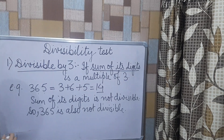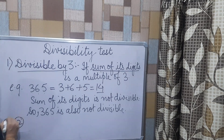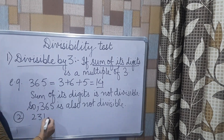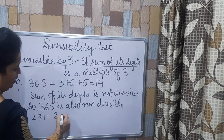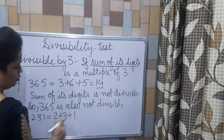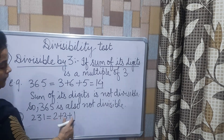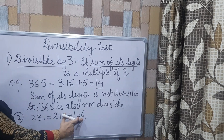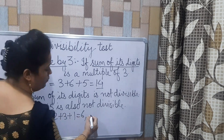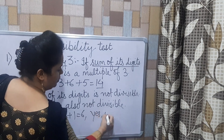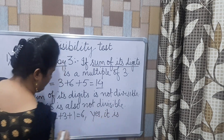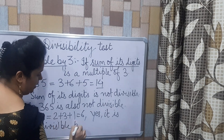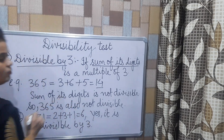This is the first case. Now for the second case, if I have the number 231, again I have to add the digits: 2 plus 3 is 5, and 5 plus 1 gives me 6. So 6 is a multiple of 3 — as you know, 3 twos are 6. So yes, 231 is divisible by 3.